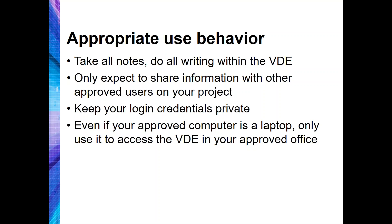We are often asked if and when it is appropriate for two individuals who collaborate on a single research project within the VDE to discuss their project face to face. As long as both individuals are listed as project team members in association with the data use agreement, they can discuss the project in one of their approved private offices used to connect to the VDE — they can look at the screen together. If someone is in the office who is not listed as an approved user, the team members must stop discussing the project and stop working in the VDE. Approved team members collaborating from different locations are permitted to talk via telephone, as long as they are each in their approved offices and take all necessary precautions to ensure that no one but approved team members can hear the conversation.